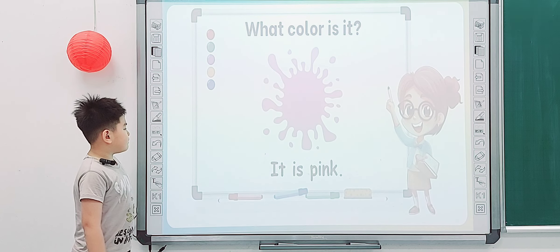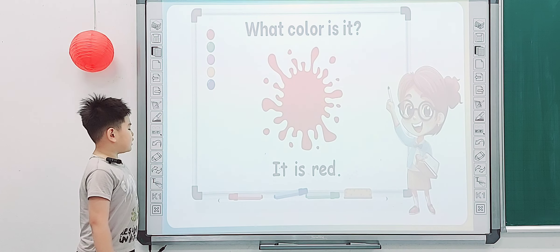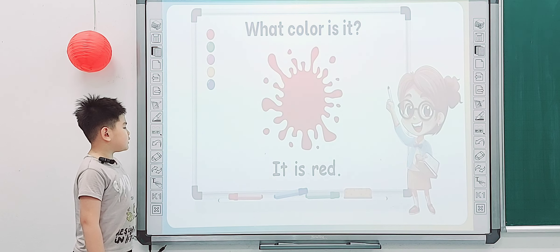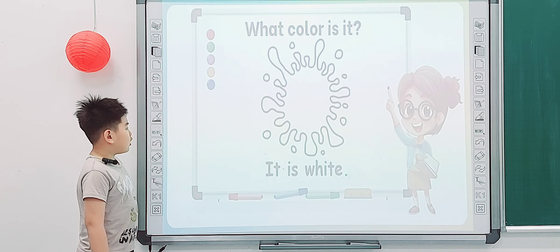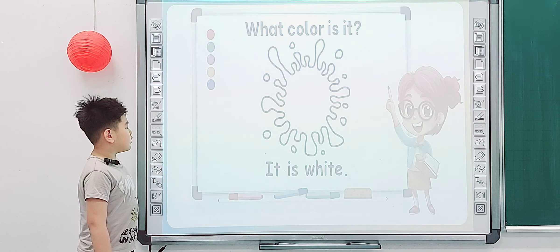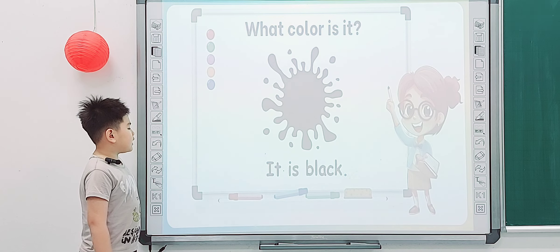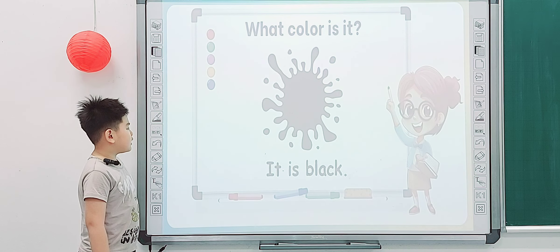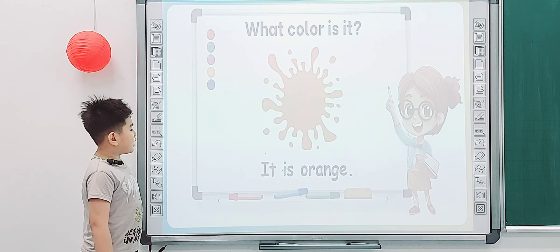What color is it? It is pink. What color is it? It is white. How about this one? It is purple. Purple. It is white. White. It is black. Yeah, and what color is it? It is orange.